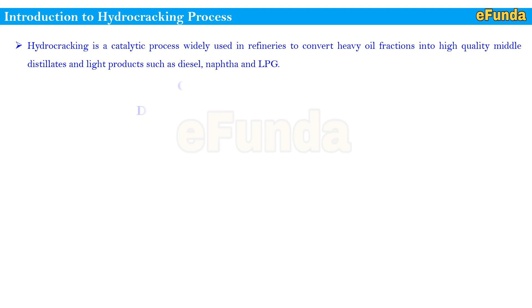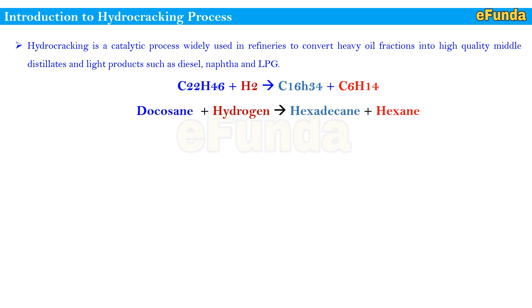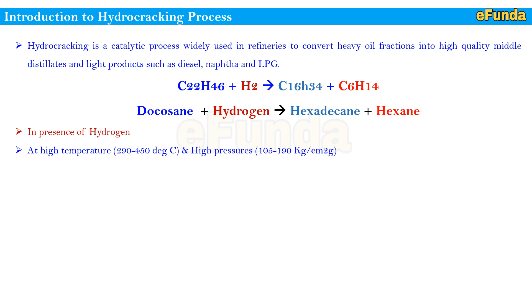One can refer to the equation where C22H46 (docosane) plus H2 (hydrogen) reacts to form separate compounds: C16H34 (hexadecane) and hexane. This hydrocracking reaction occurs at high temperatures of 290°C to 450°C and high pressures of 105 to 190 kg/cm² gauge, in the presence of a catalyst. The resulting products are clean, saturated, and high in value.